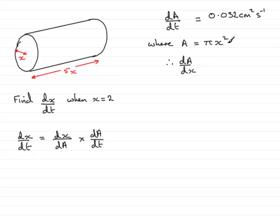So dA dx, if you differentiate this, is 2 pi x. OK, that's pi times 2x, so 2 pi x. So therefore, dx by dA would be the reciprocal of that, in other words, 1 divided by 2 pi x.